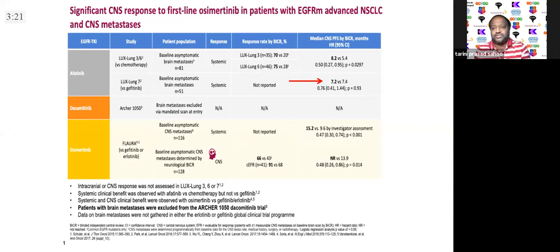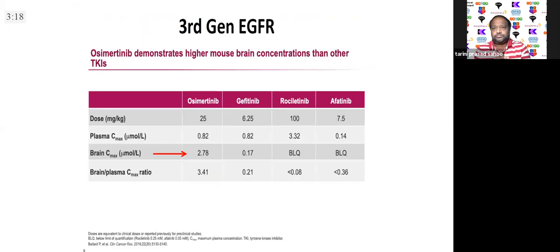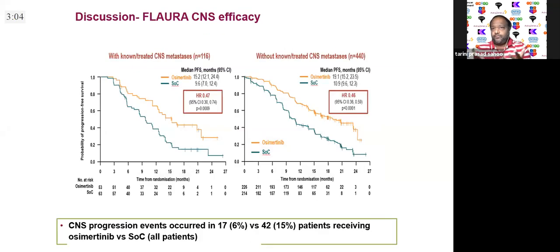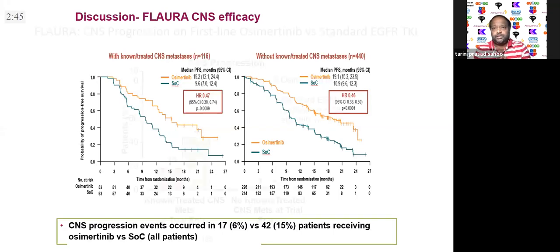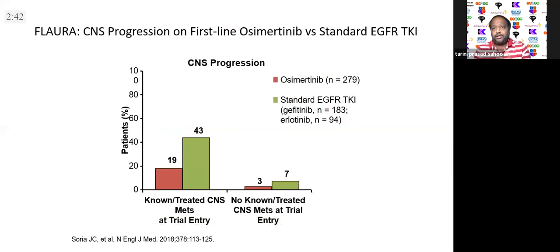The third-generation osimertinib is the current standard because its CNS penetration is maximum. Looking at FLORA data for CNS efficacy: in patients with known CNS mets and those without, the hazard ratio is nearly the same — around 0.46 to 0.48 — telling us the benefit is there regardless of CNS disease presence. The PFS is also similar between groups.